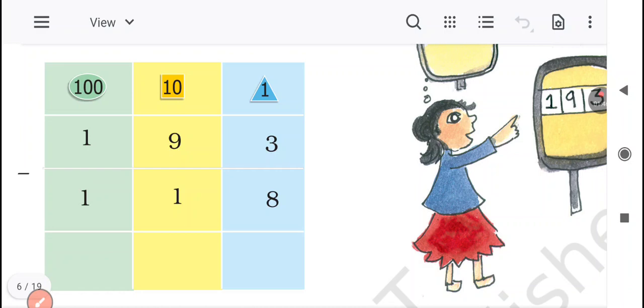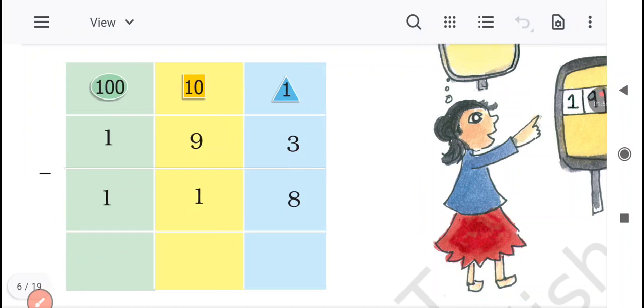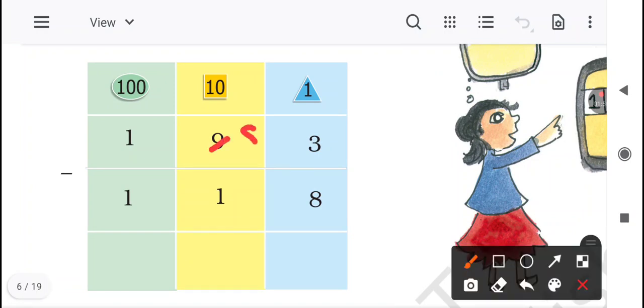So we'll just subtract. 3 will take 1 from 9. So 9 will become 8, and 3 will become 13. Now from 13 we have to subtract 8. 1, 2, 3, 4, 5, 6, 7, 8. Answer is 5. Now tens place, 8 minus 1 is equal to 7. We know that property of subtraction - if we subtract a number from itself, the answer will always be the previous number. Before number is the answer. 1 minus 1 is equal to 0. So the answer is 75.